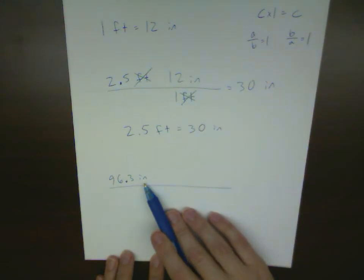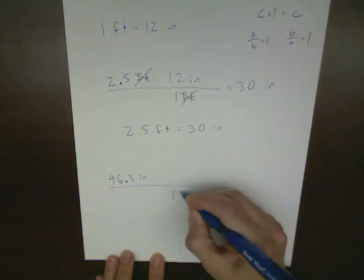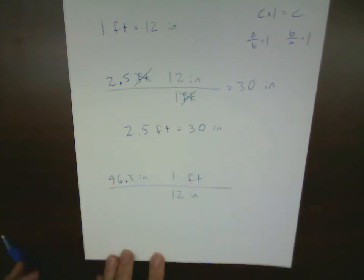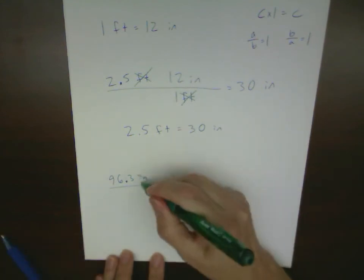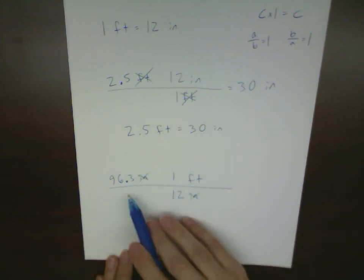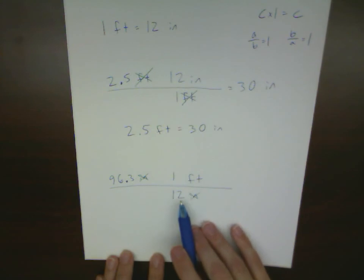So in this case, the 12 inches goes on the bottom, 1 foot goes on top. And again, my units in the numerator and denominator cancel each other out, and I'm left with 96.3 times 1 divided by 12, with the unit of feet left over.